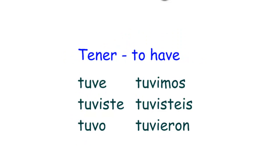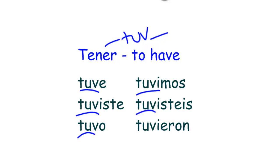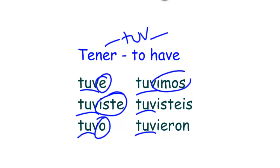Let's look at our next verb: tener, to have. Remember tener — it goes to tuv-. Then fill in the blank: tuve, tuviste, tuvo, tuvimos, tuvisteis, tuvieron. You heard those endings: e, iste, o, imos, isteis, ieron. So it has all those same endings — it just goes to tuv-.